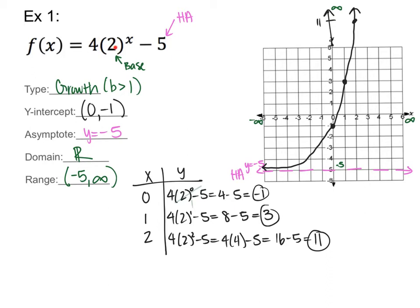So here's the process: first identify the base to determine growth or decay; second, find and draw the horizontal asymptote; third, make a table and choose x values to plot at least three points — this helps with accuracy. Connect the dots and draw the curve.